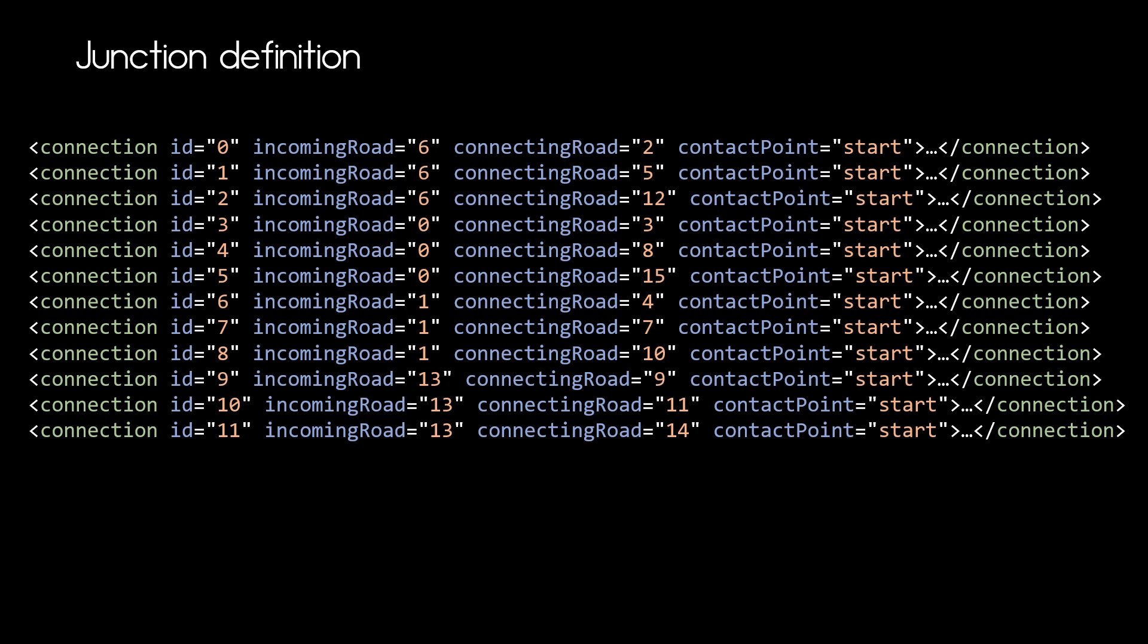The connection elements use the beforehand defined roads to form all the connections within the junction. For our example we need 12 connections. So let's see why.